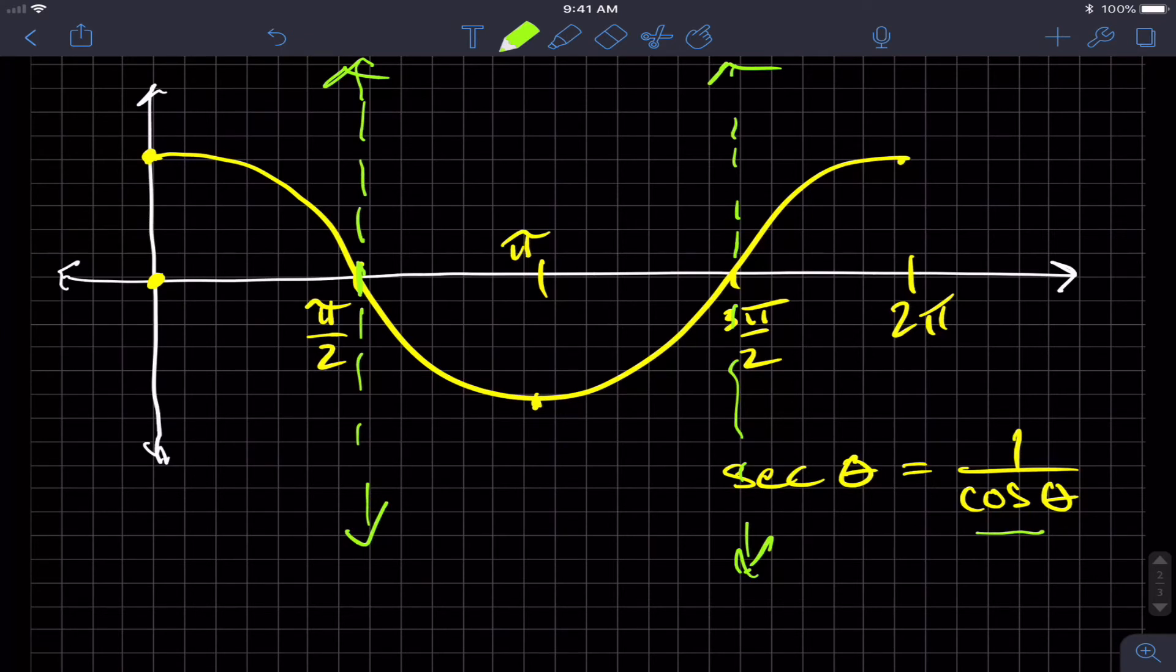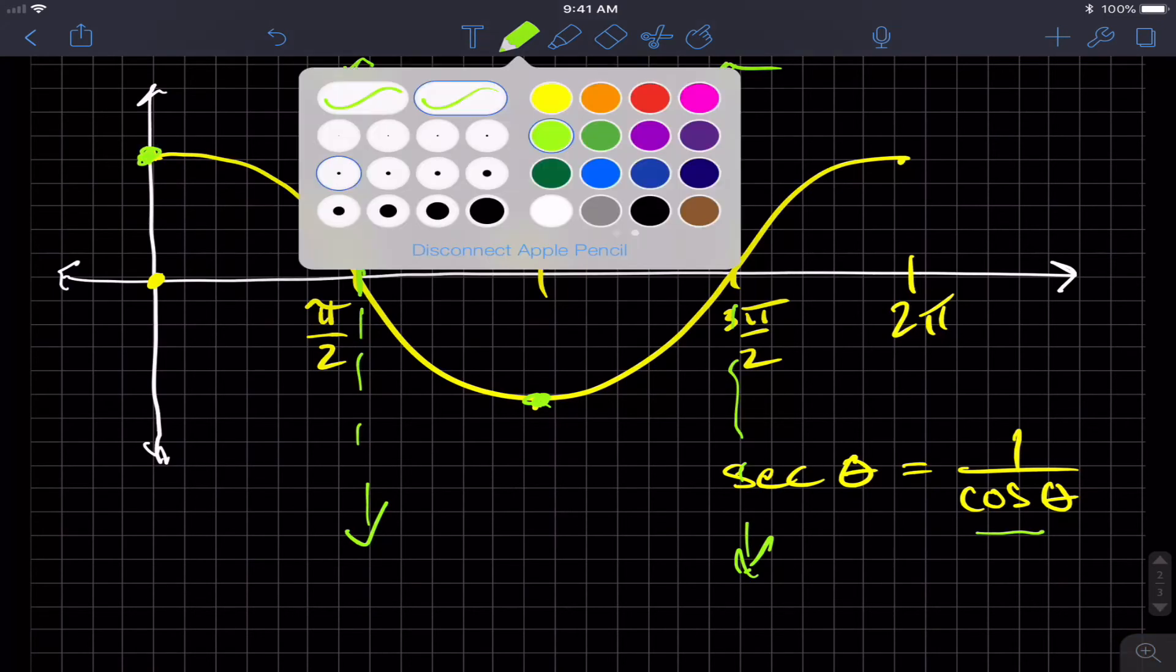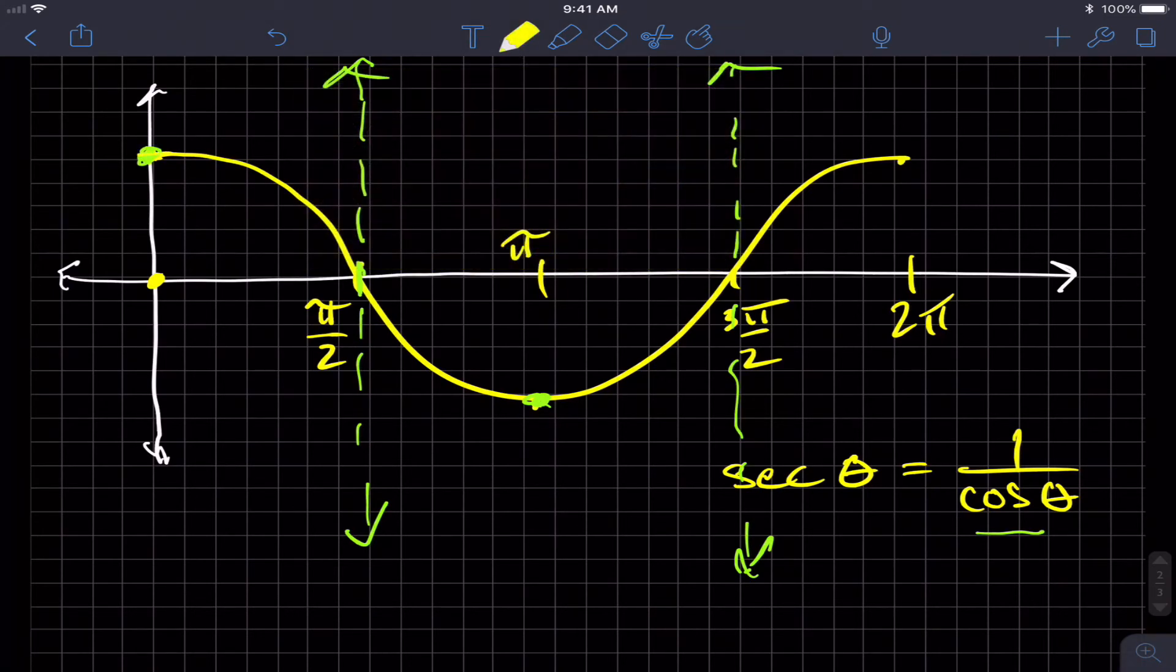Then, once I get to these values of one or negative one, I just get the reciprocal of negative one, which is still negative one, and the reciprocal of one, which is still one. And so I get what happens is if I analyze again the unit circle as we travel around it, I'm going to get these U shapes for the cosecant function.